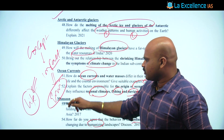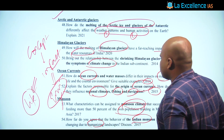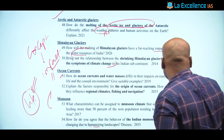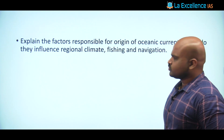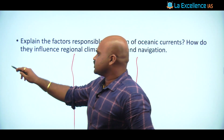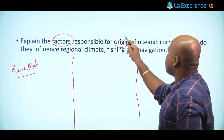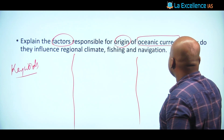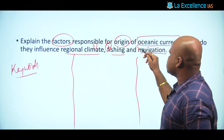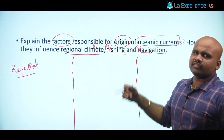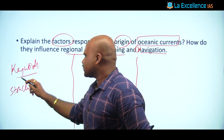Now let's move on to one sample question: 'Explain the factors responsible for the origin of oceanic currents. How do they influence the regional climate, fishing, and navigation?' Following the same pattern, the initial aspect is identifying the keywords. The keywords here are: factors responsible for origin of oceanic currents, and how they influence regional climate, fishing, and navigation — these are the keywords.